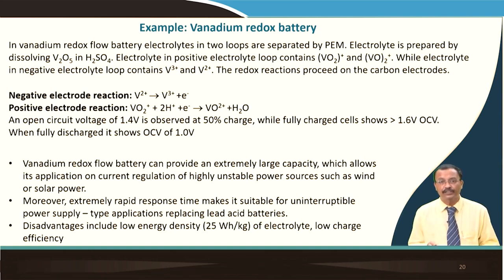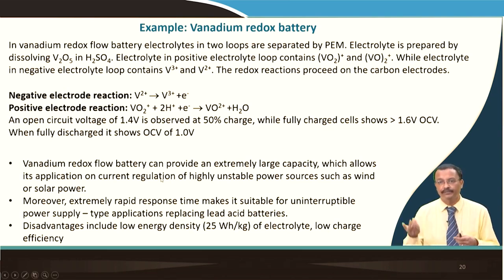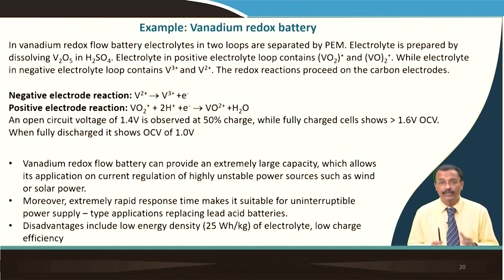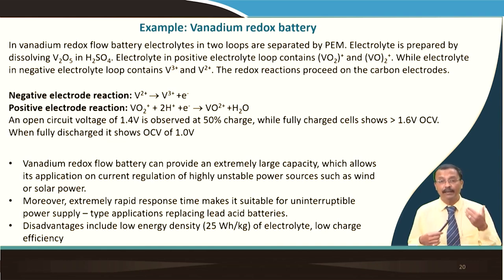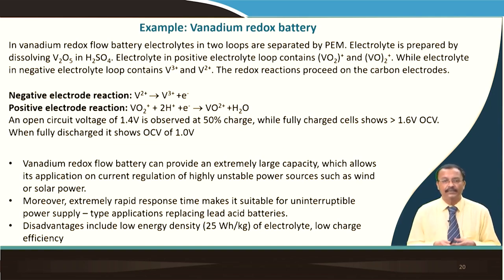When fully discharged, the open circuit voltage is around 1 V. Vanadium redox flow batteries have extremely large capacity, which allows application in current regulation of highly unstable power sources such as renewable energy — wind and solar power. Extremely rapid response time makes them suitable for uninterrupted power supply applications, replacing lead acid batteries. For stationary use, this is the answer.